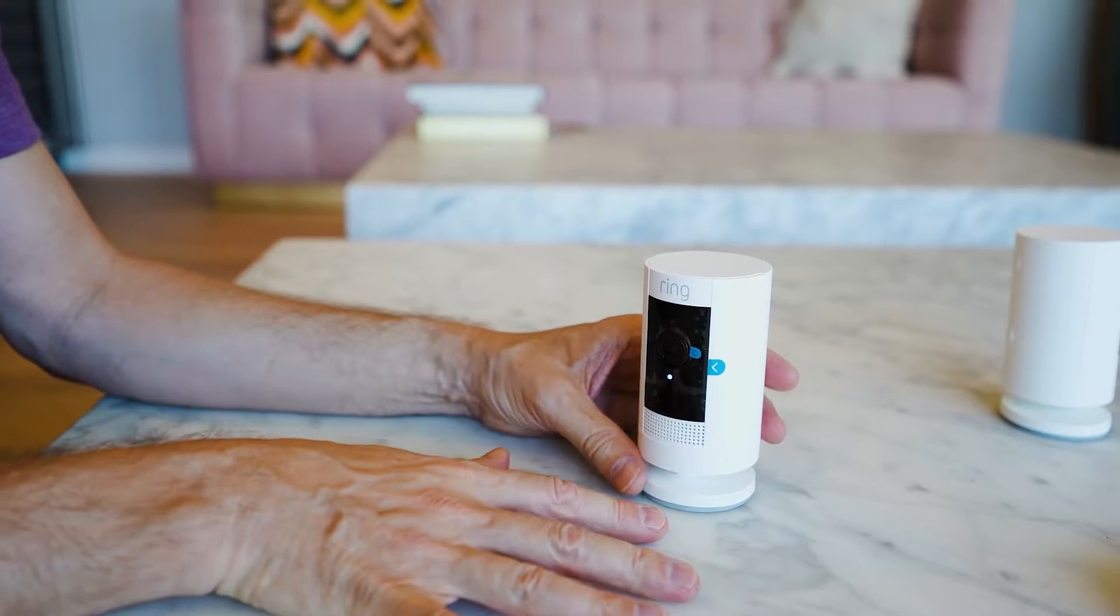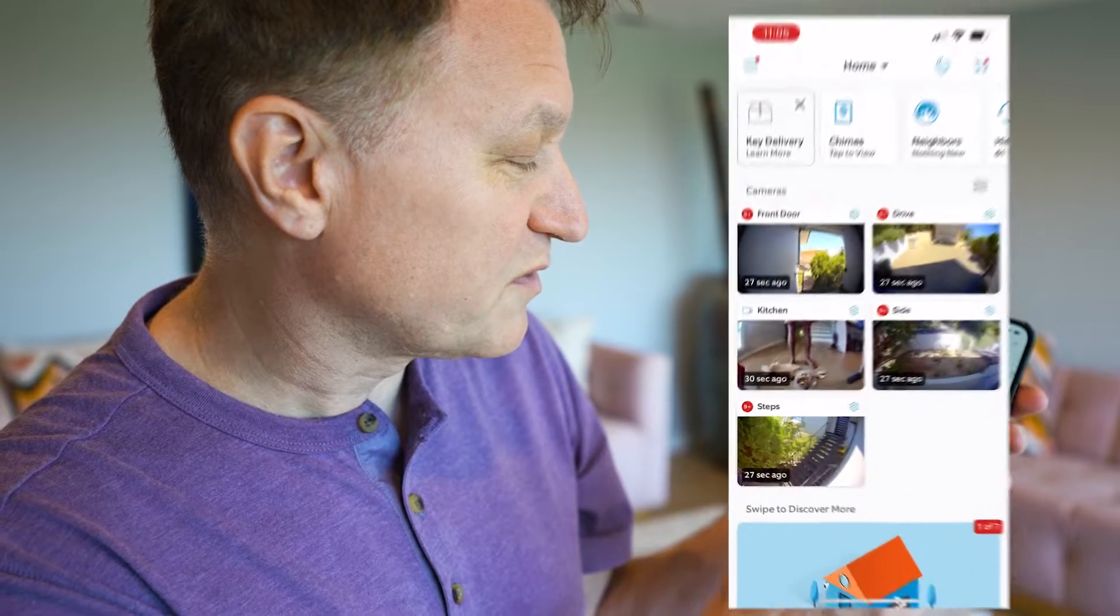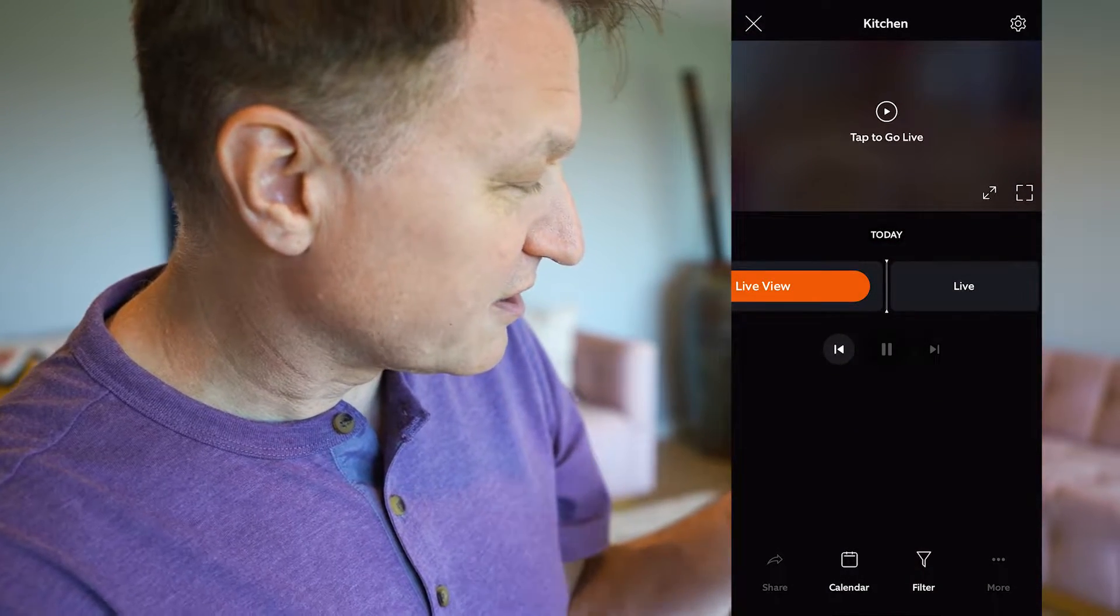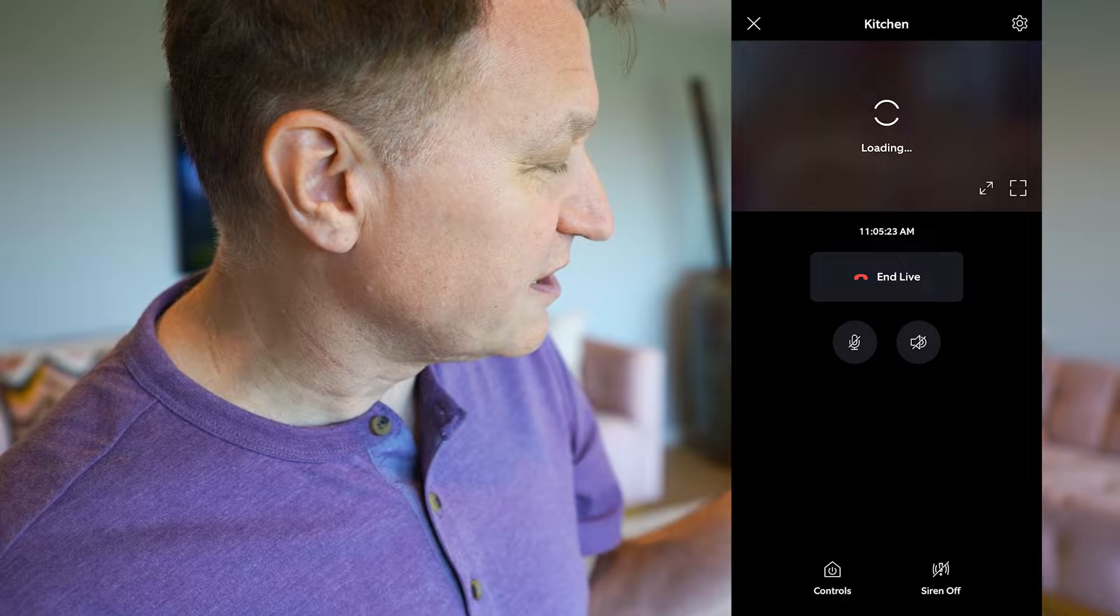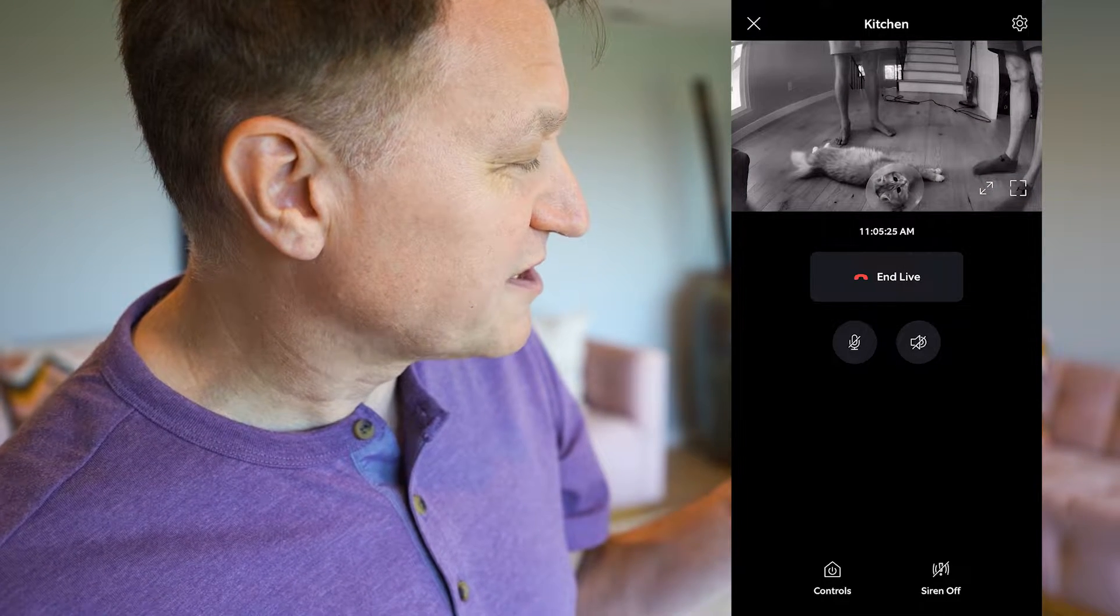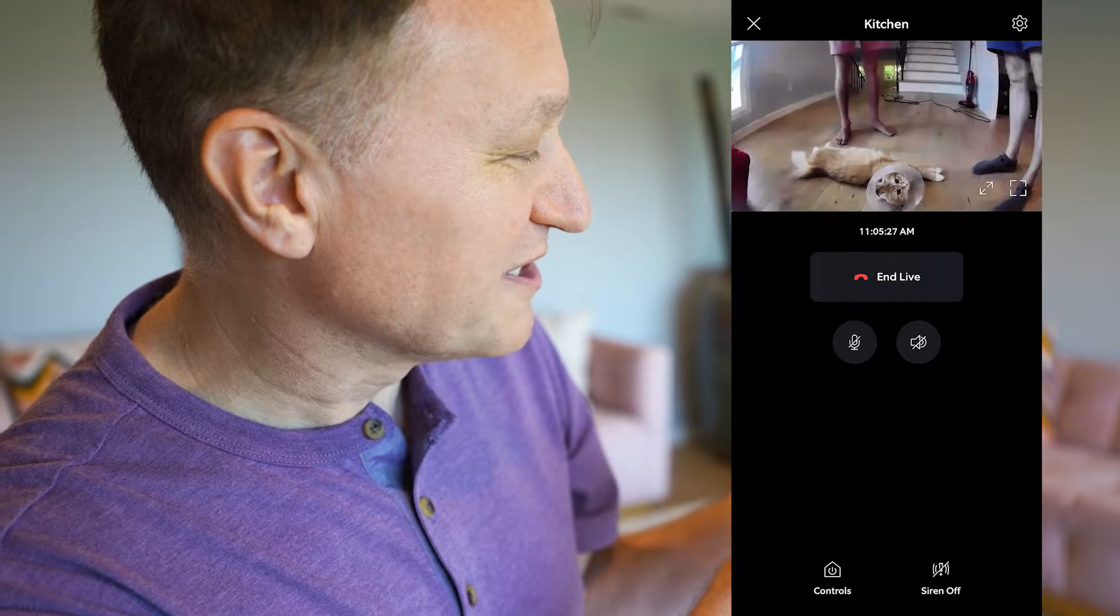So let me show you in the app what this looks like. I've got the Ring app open and I've got different cameras set up at different zones around the house. So this is the one that I just set up. And I'm gonna go live right now. We can see my cat down below us there.